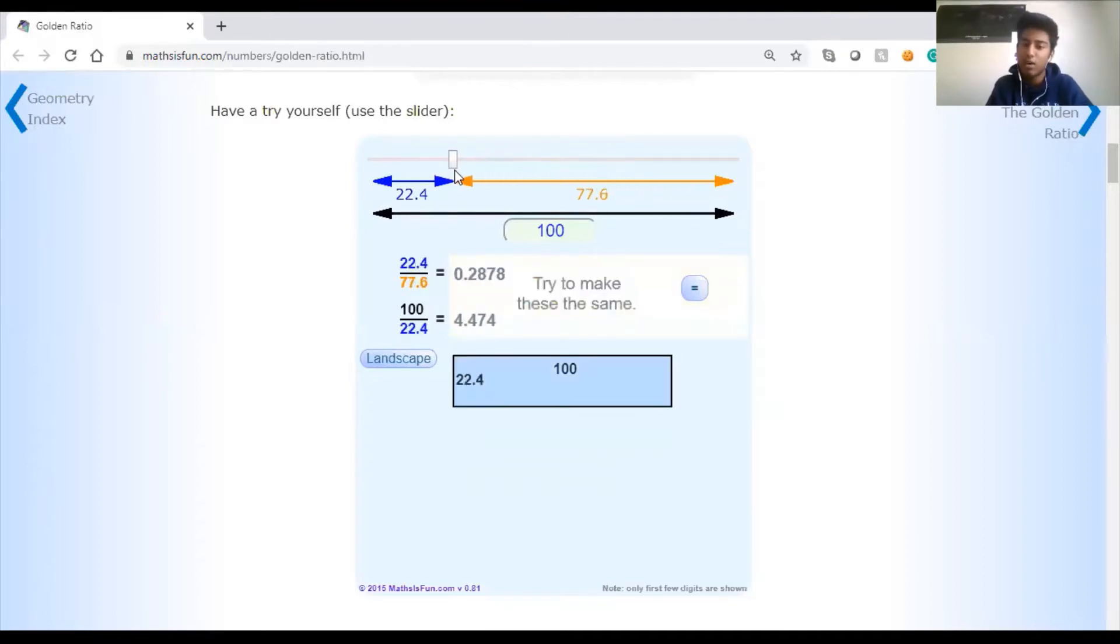And you'll see that as I move the slider around, these ratios are not equal, but only at one point will they be equal. And when they are equal, it's equal to 1.618, right there. And I encourage you to do this and see how you can try and get the two ratios to be equal. So back to the slideshow.